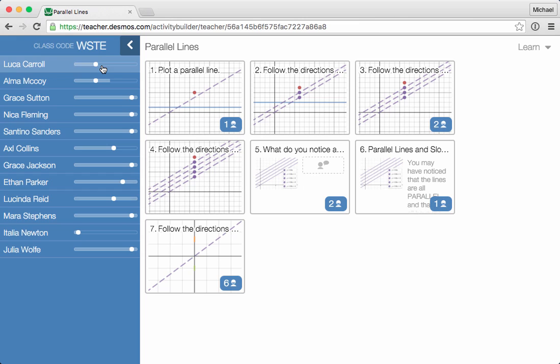Here on the left you'll see student names and their progress. It looks like Alma McCoy has made it to screen 4, but right now she's working a bit more on screen 3. In fact, she's one of two students on that screen right now, as indicated by this icon right here.